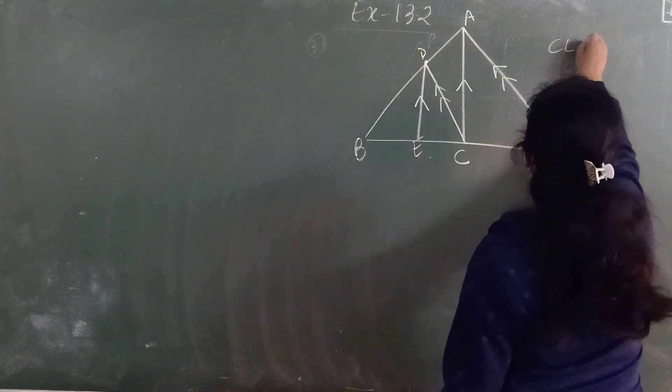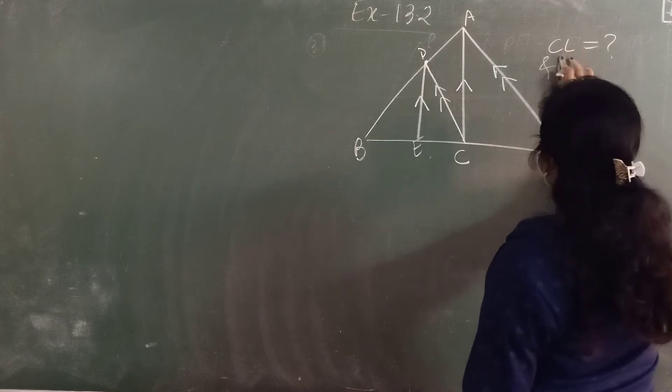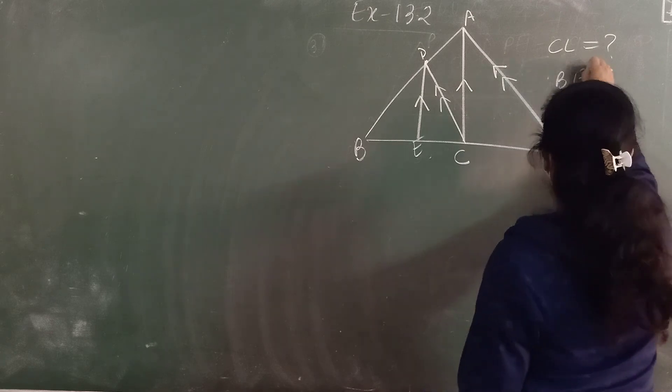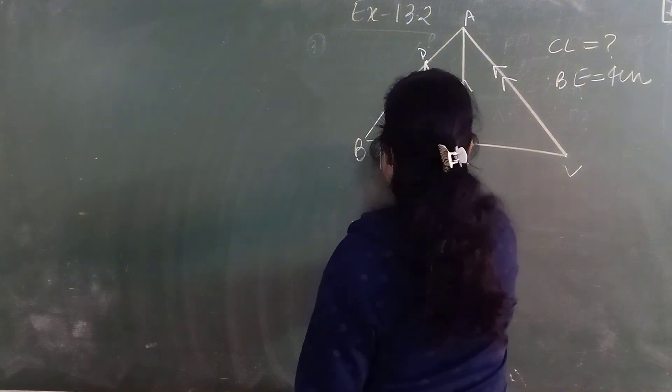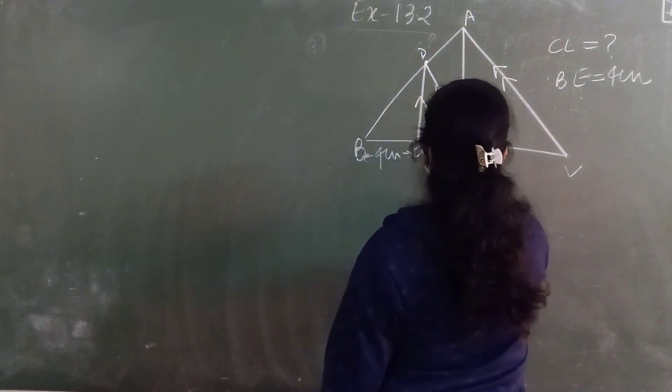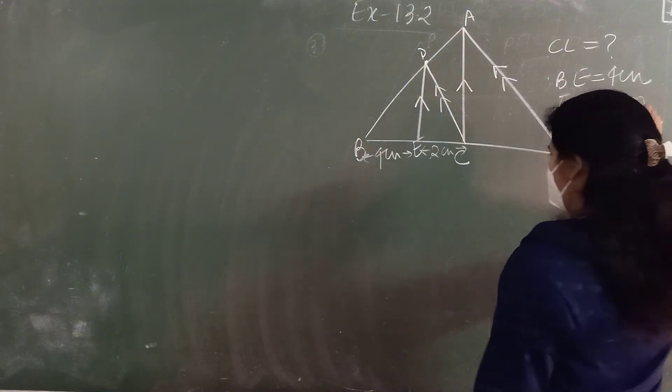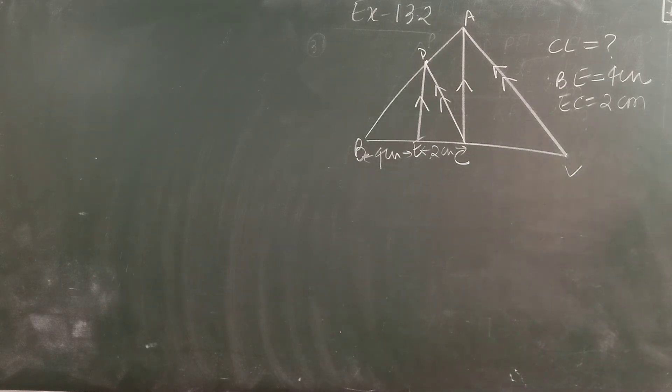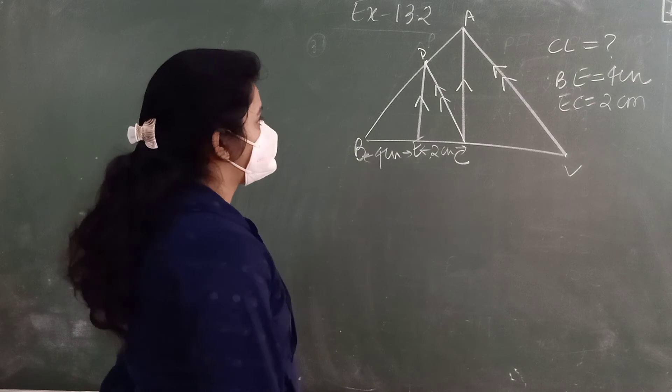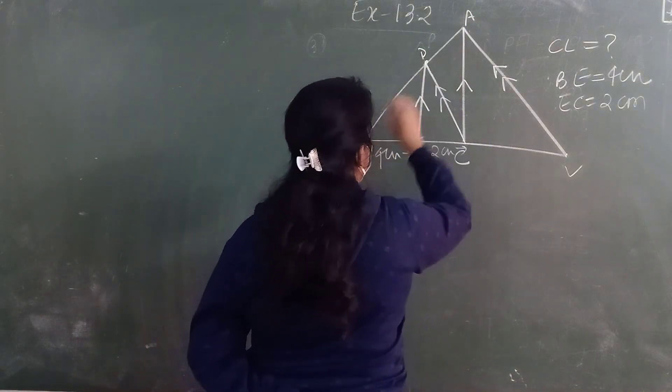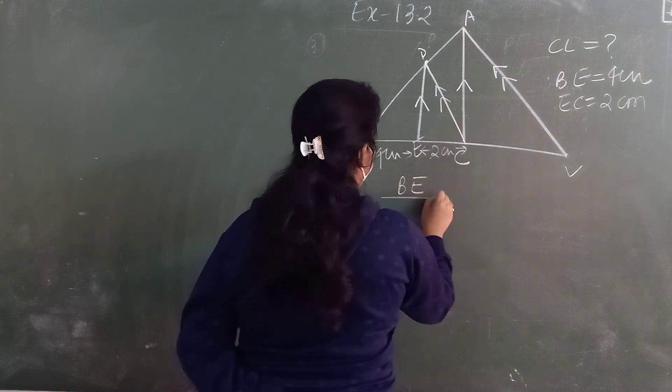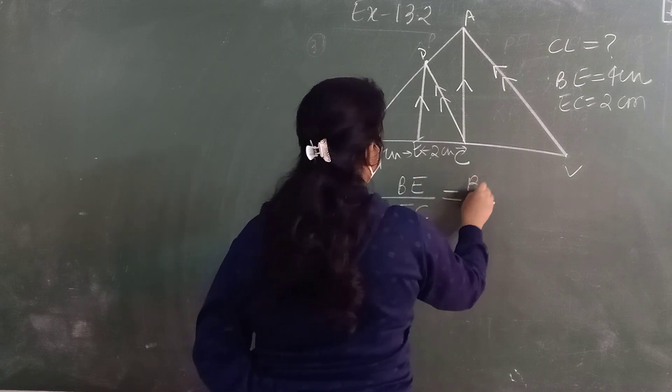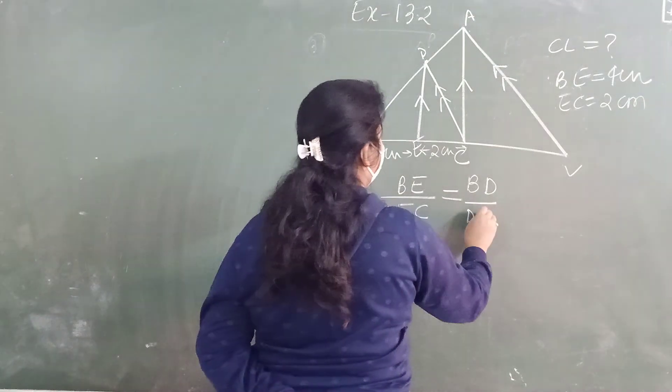Find the length of CL and BE. BE is given. You have to get the length of CL. Length of BE is 4 centimeter. Only this is given. EC is 2 centimeter. BE is 4 centimeter. EC is 2 centimeter. How will you get CL? By which ratio? If these two sides are parallel, then we can write BE upon EC is equal to BD upon DA.